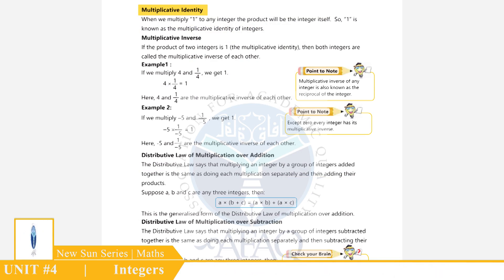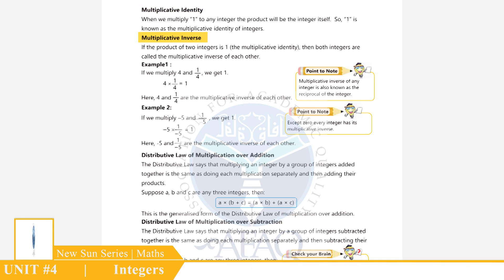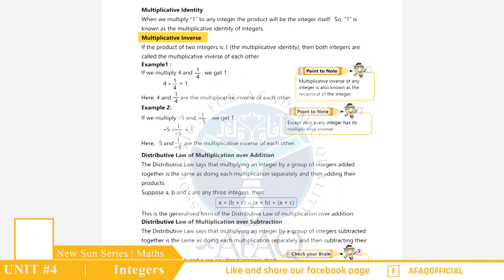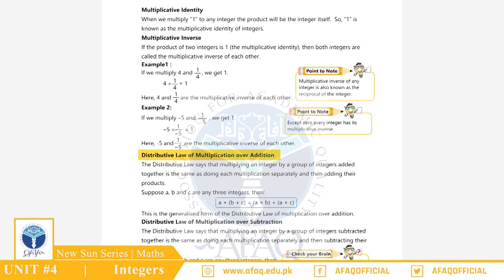Multiplication Identity: अगर हम किसी भी integer को 1 के साथ multiply करेंगे तो जवाब में वही integer आएगा। Multiplicative Inverse: अगर दो integers का product 1 आएगा तो ये दोनों integers एक दूसरे के multiplicative inverse होंगे।